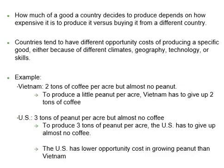Suppose two countries, Vietnam and the United States, need to decide how much peanut and coffee they will produce. Due to its climatic conditions and technology, Vietnam can produce two tons of coffee per acre but almost no peanut. That means to produce a very little amount of peanut per acre, Vietnam has to give up two tons of coffee, so the opportunity cost for growing a little peanut per acre is two tons of coffee. In contrast, the United States can produce three tons of peanut per acre but almost no coffee, so the opportunity cost of growing a lot of peanut per acre is just a little amount of coffee.